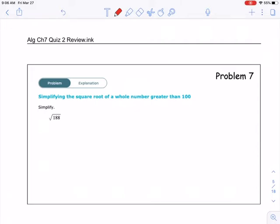Hey, alright, let's do this problem 7. So this is problem 7 that you may or may not get and see a problem like or exactly like this. So simplify the square root of a whole number greater than 100. Well, you've got the square root of 188.